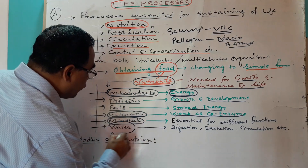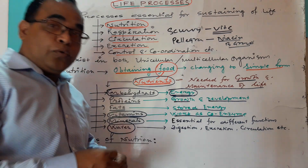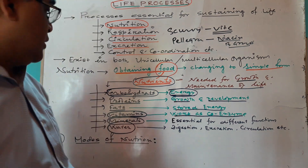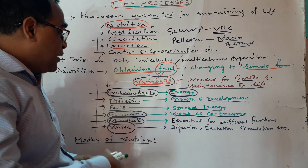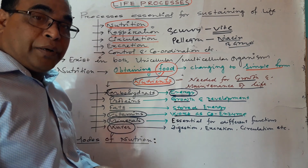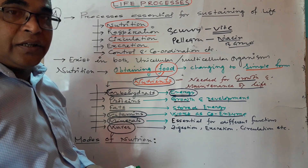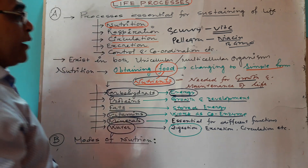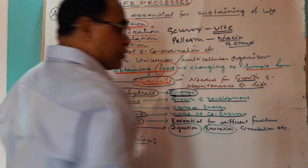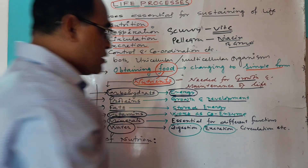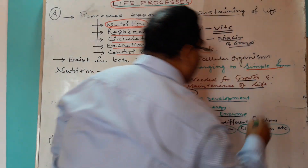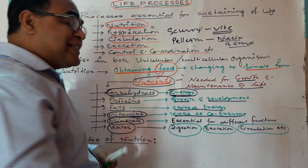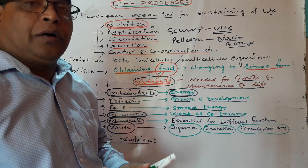And finally, water. Two-thirds of our body is made up of water. What are the important functions that require water? Digestion — the digestion process requires water. Circulation — we are talking about the blood; the fluid vehicle of blood is water. So water is a very important component of our food.